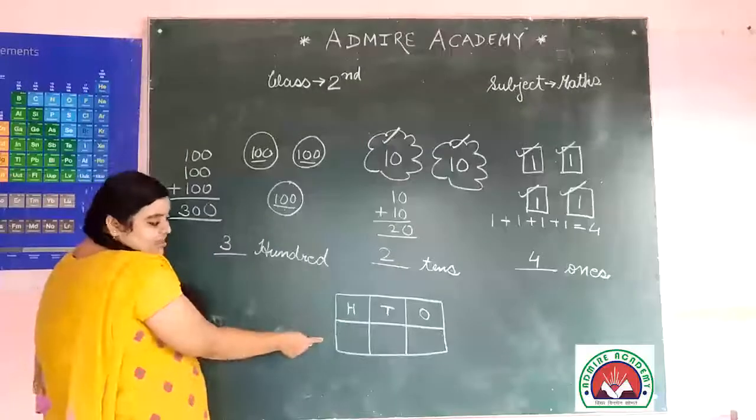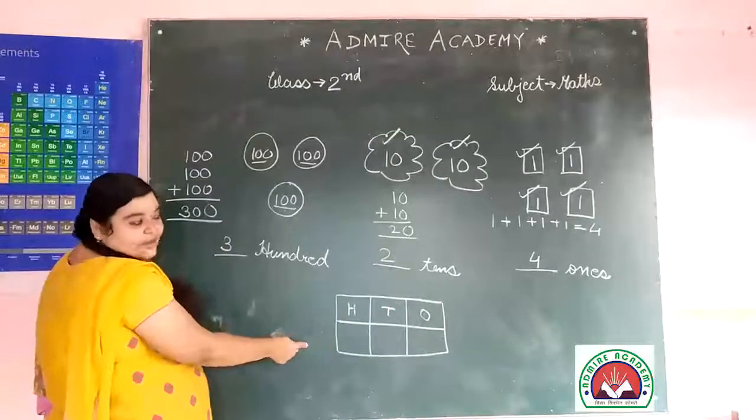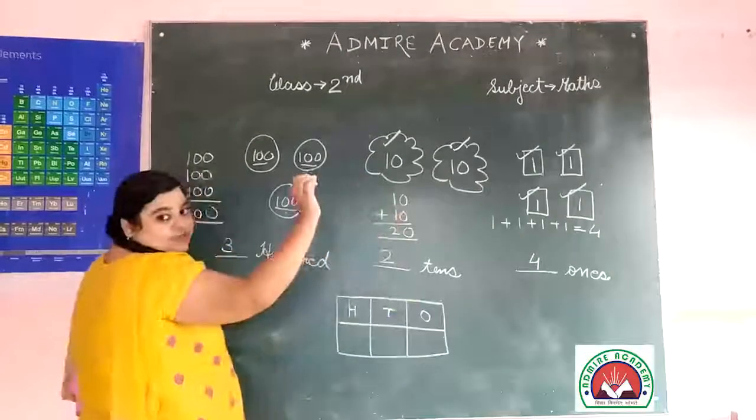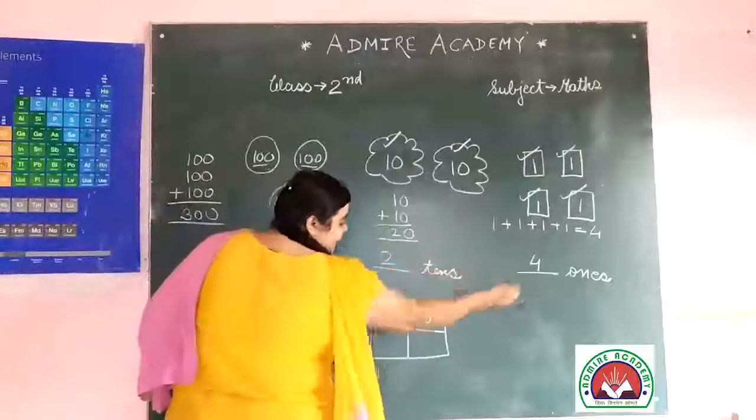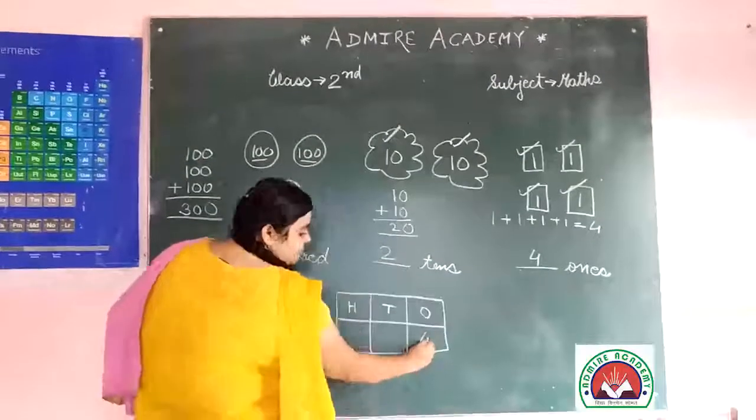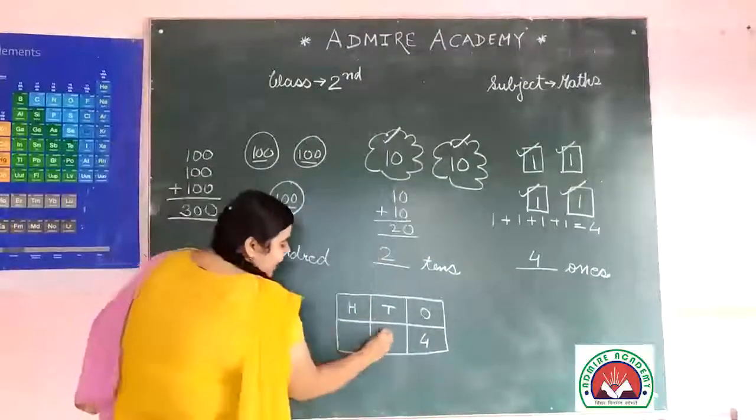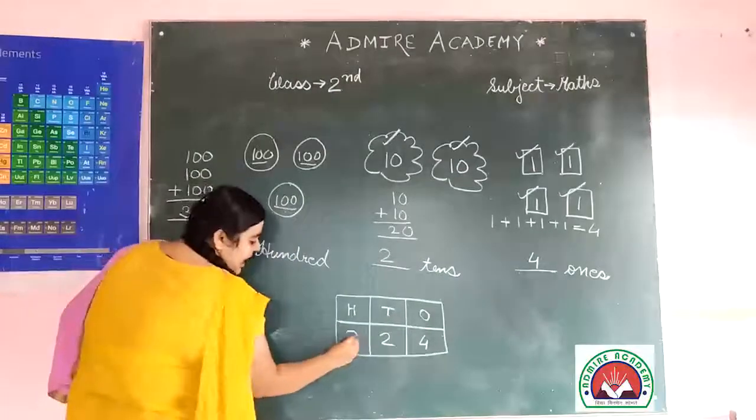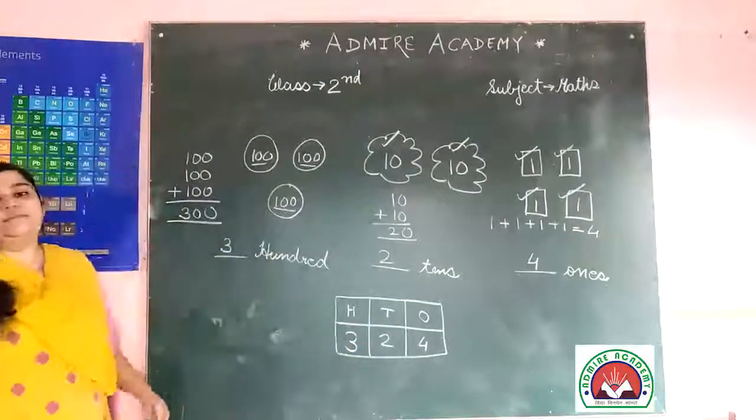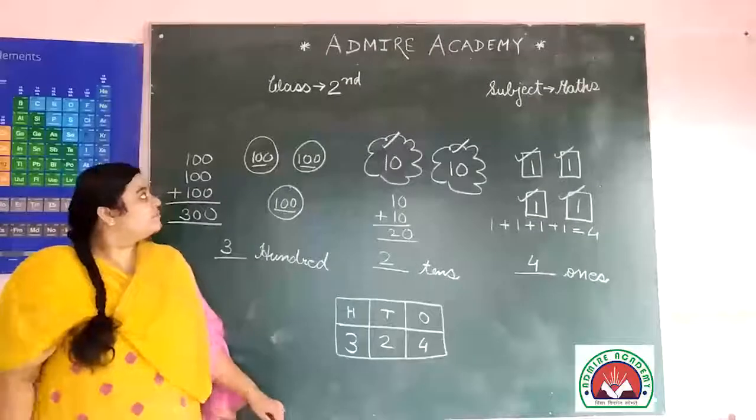And now we can place values. So starting from the right hand side, 4 in the ones place, 2 in the tens place, 3 in the hundreds place.